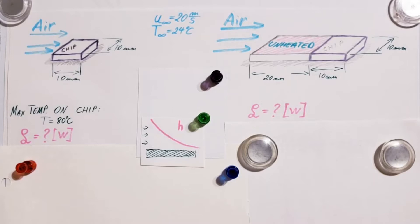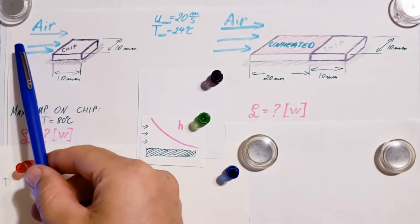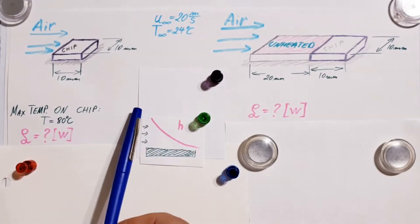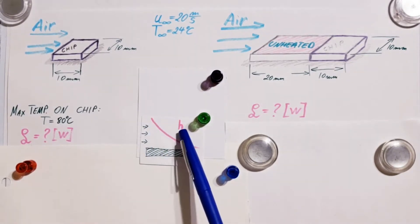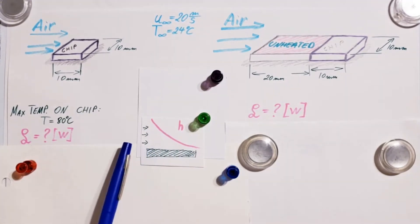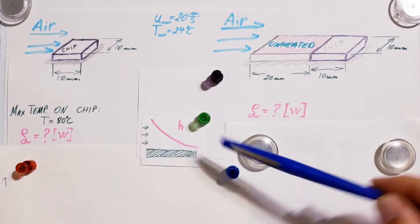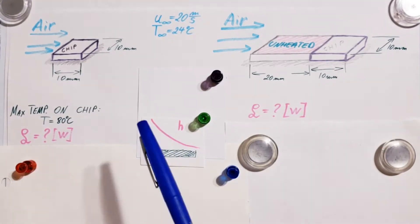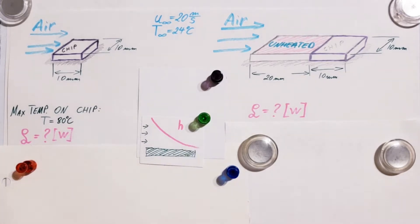Let's think about what it means that the maximum temperature cannot exceed 80 degrees Celsius. For convection, the air blows over the chip and the convection coefficient H is highest at the leading edge. As we go further along, H gets lower and lower. So our highest temperature — the 80 degrees — will most likely occur at the trailing edge. If we ensured 80 degrees at the leading edge, the trailing edge would definitely exceed it. So we must ensure the end does not exceed 80 degrees Celsius.